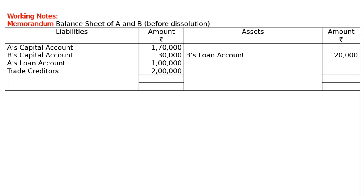In the case of A's loan, the firm has taken the loan from A. We total the liability side — rupees 5 lakh — bring it to the asset side, and deduct B's loan account of rupees 20,000. The sundry assets are found as a balancing figure: rupees 4 lakh 80,000.